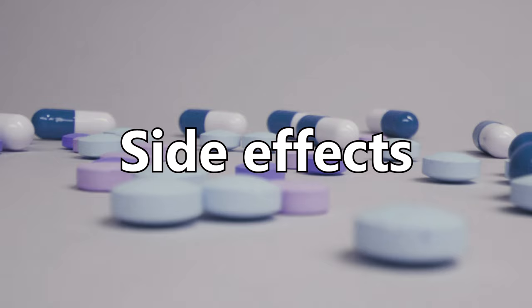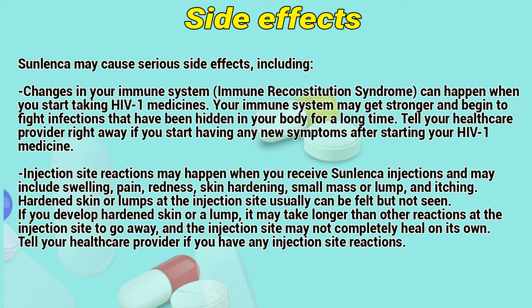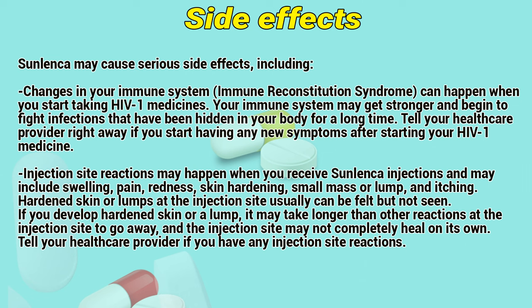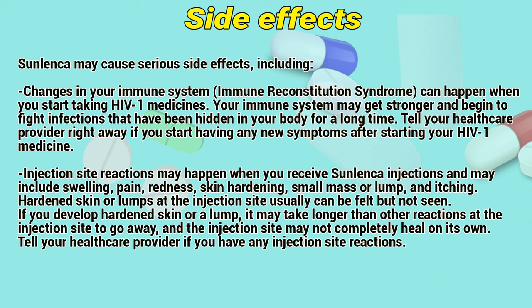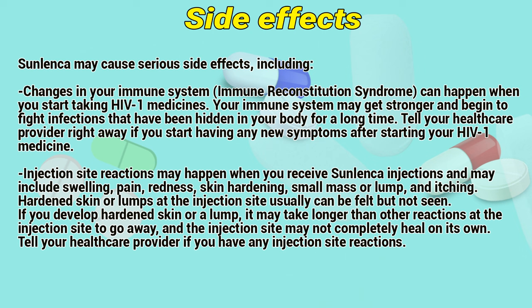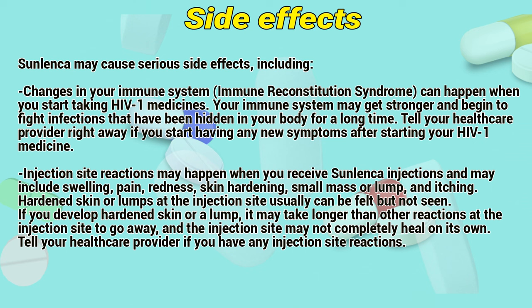Side effects. SanDenco may cause several side effects, including changes in your immune system. Immune reconstitution syndrome can happen when you start taking HIV-1 medicines — your immune system may get stronger and begin to fight infections that have been hiding in your body for a long time. Tell your healthcare provider right away if you start having any new symptoms after starting your HIV-1 medicine. Injection site reactions may happen when you receive your injections and may include swelling, pain, redness, skin hardening, a small mass or lump, and itching.